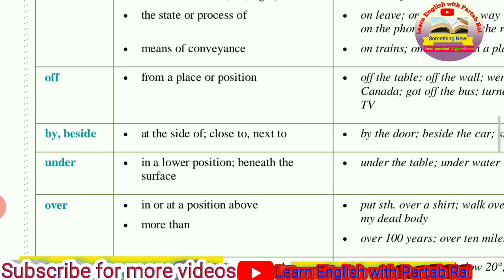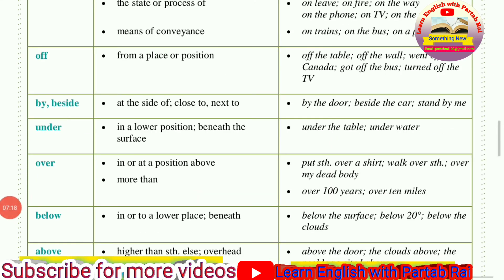After that we talk about the preposition UNDER. We use UNDER when something is in a lower position, beneath something. Now we talk about OVER — OVER is used when something is at a position above. There is a little bit of difference between OVER and ABOVE.